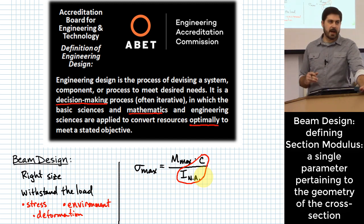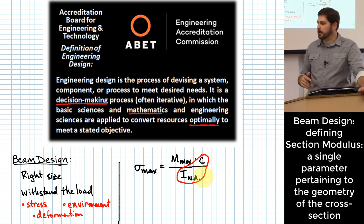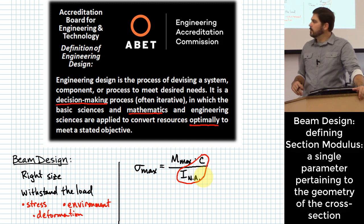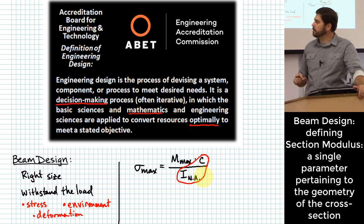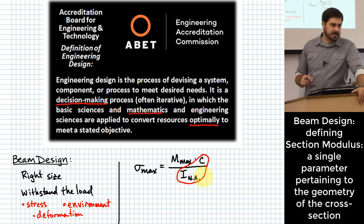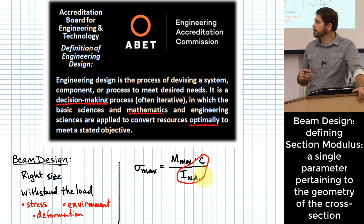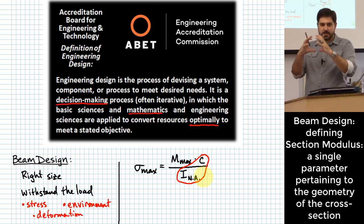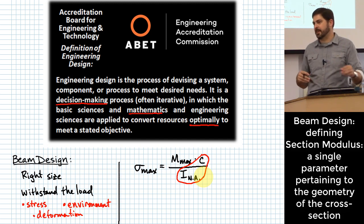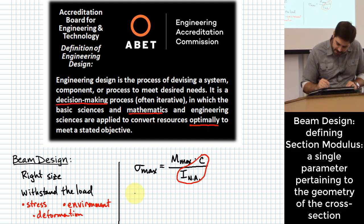If you're a manufacturer selling standard beams, would it be possible to collapse those two pieces of information — the second moment of area I and the furthest distance c — into one number? The advantage would be that you'd have one number that's just a function of the cross section. This gives rise to a parameter called section modulus.